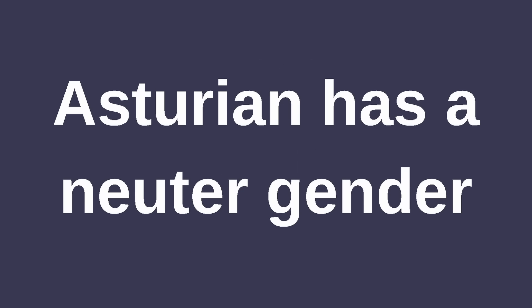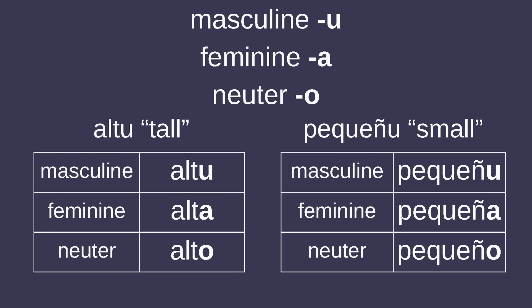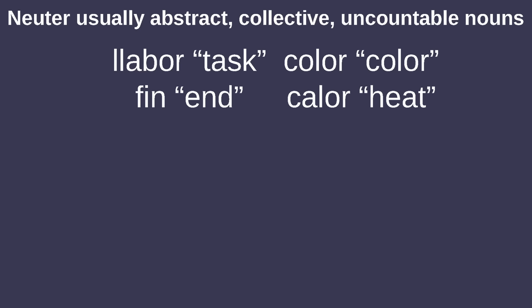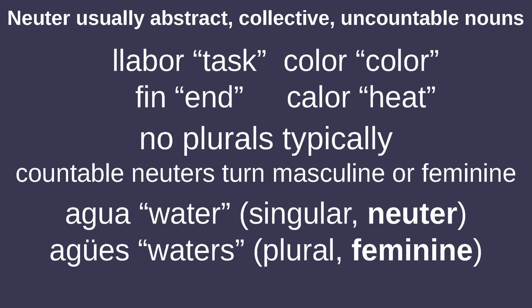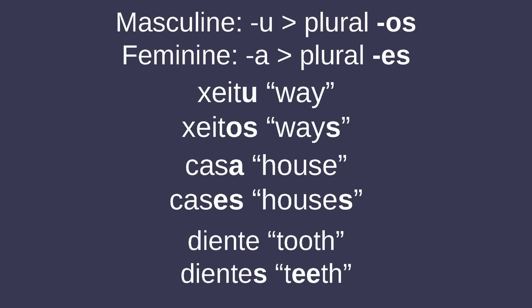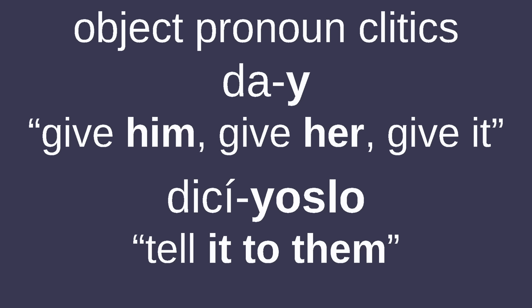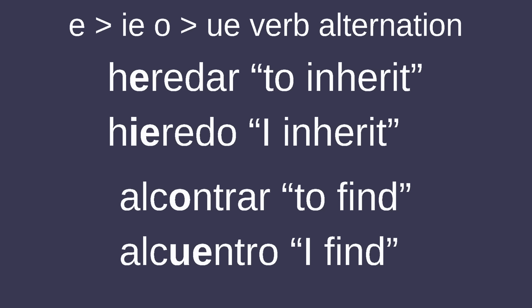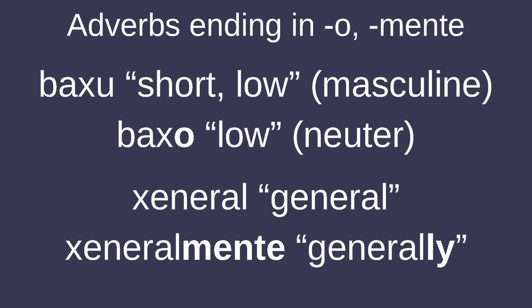What isn't similar to Spanish, or most Western Romance languages, is the fact that Asturian has a neuter gender. Inflections for masculine nouns tend to end with U, feminine inflections with A, and O is usually neuter. Neuter nouns can be divided into masculine neuters and feminine neuters, and pure neuters, which refer to nominal groups with adjectives and neuter pronouns. Neuter nouns usually refer to abstract, collective, and/or uncountable nouns, and have no plurals except in cases where they turn masculine or feminine. Plurals are formed both by changing the vowel and adding S, with masculine singular U becoming plural OS, and feminine singular A turning into plural ES. There are object pronoun clitics like in Spanish and Portuguese. Compound tenses are rarely used in Asturian, with simple tenses being preferred. There's an A-YE and O-WE verb alternation, and adverbs are often formed from adjectives with their neuter ending of O, or with the suffix '-mente.'